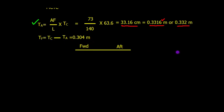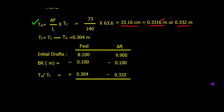Let's summarize what we have achieved. Initial drafts: 8.1 forward and 9.9 aft. Body rise is 0.1 meters, and since it is rise, it will decrease the draft. Changes in draft: TF is 0.304 meters and TA is 0.332 meters.